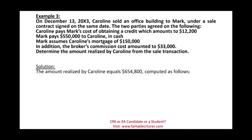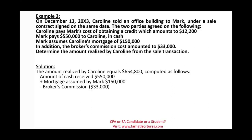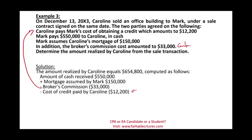The amount realized by Caroline is $654,800, computed as follows: cash received $5,050 (straightforward), plus mortgage assumed by Mark $150,000, minus the brokerage commission of $33,000 paid by Caroline as a selling expense, minus the $12,200 cost of obtaining credit paid by Caroline on behalf of Mark. Netting all of those gives $654,800 — the amount realized. We then compare this to the cost basis to determine the gain or loss.